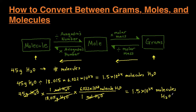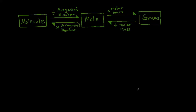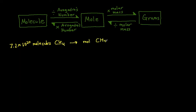Let's work through another example. Let's say we have 7.2 times 10 to the 20 molecules of methane, CH₄, and we're trying to get that to moles of CH₄. Let's take a look at our flowchart — where we're starting, where we're trying to go. We have molecules right here and we're trying to get to moles, so we only have to do one step: divide by Avogadro's number, and that gives us the moles.